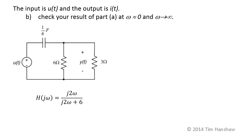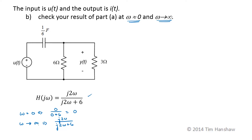In part B, we want to check the result of part A at very low frequencies, omega approximately 0, and very high frequencies as omega goes to infinity. This is the frequency response we came up with. If omega is 0, this becomes 0 over 0 plus 6, which is just 0. And as omega goes to infinity, this is J2 omega over J2 omega plus 6. As omega goes to infinity, that term becomes very large compared to the 6, so this is approximately J2 omega over J2 omega. Since these are the same omega, they cancel, so the high frequency gain should be about 1.